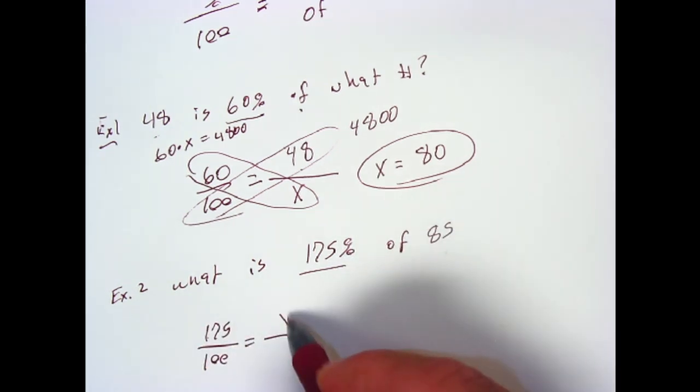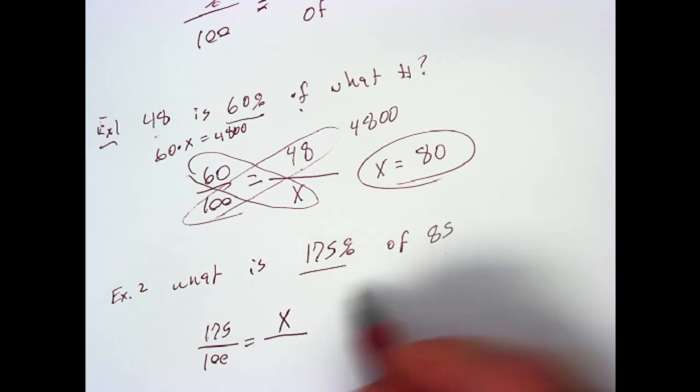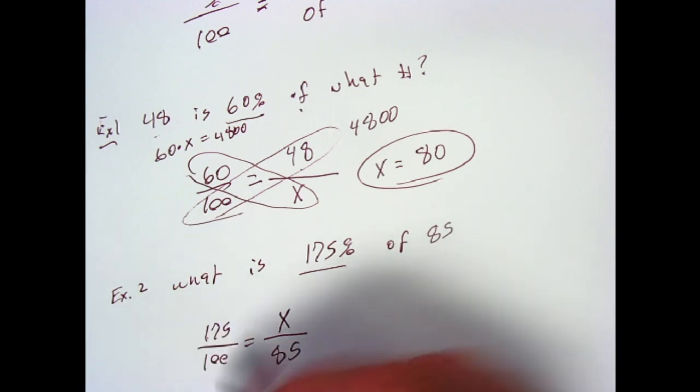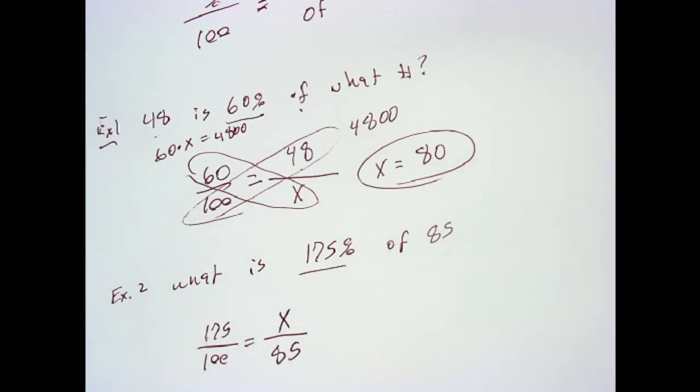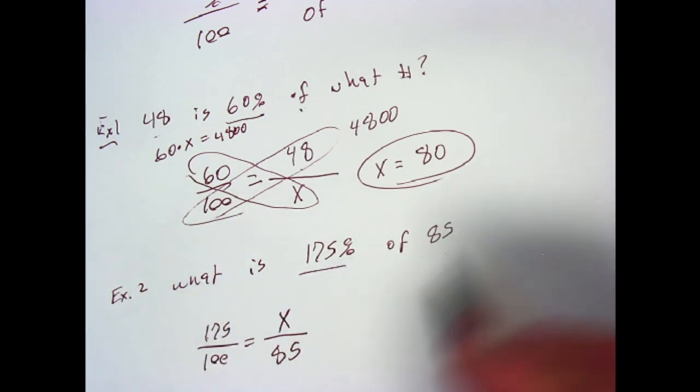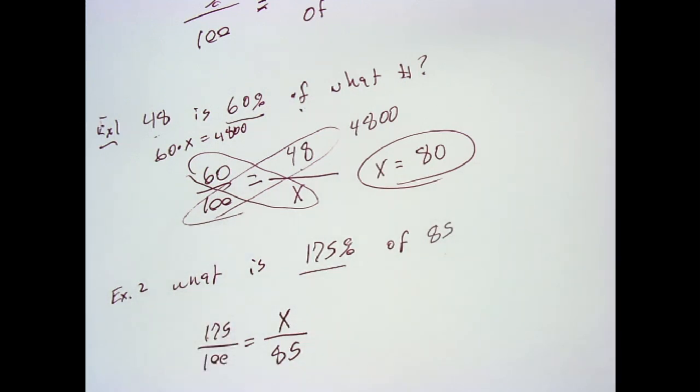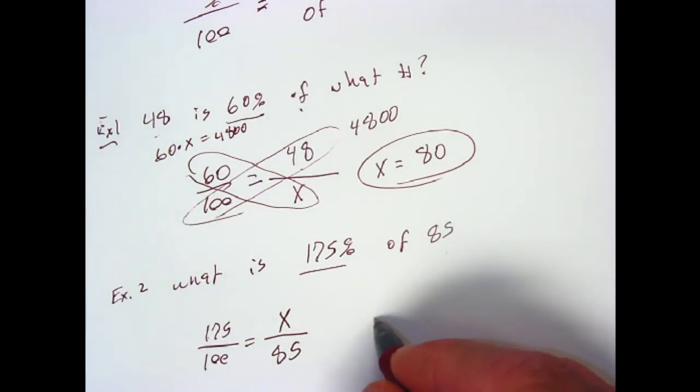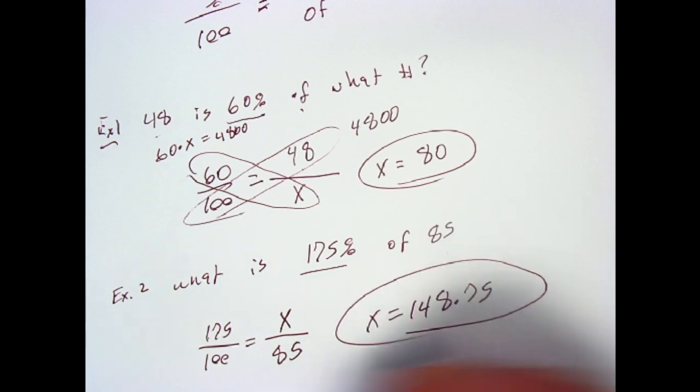And we cross multiply, and we get 175 times 85 is 14,875 divided by 100. And we get x equals 148.75.